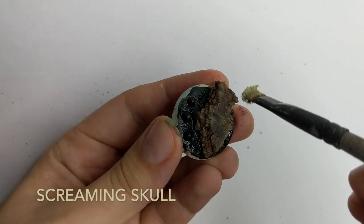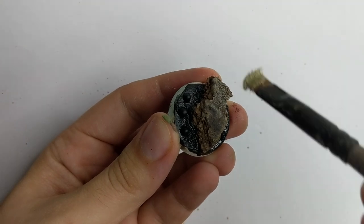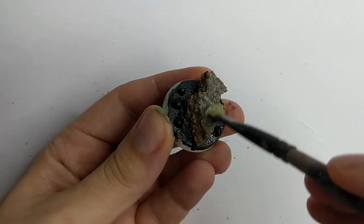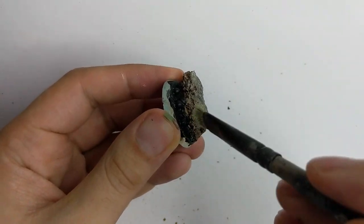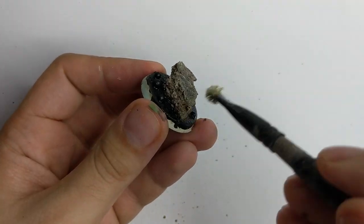To highlight the stone I will use Screaming Skull. Just dry brush it all over your stone at the top. I picked this color because Screaming Skull is like a natural highlight for the Zandri dust.